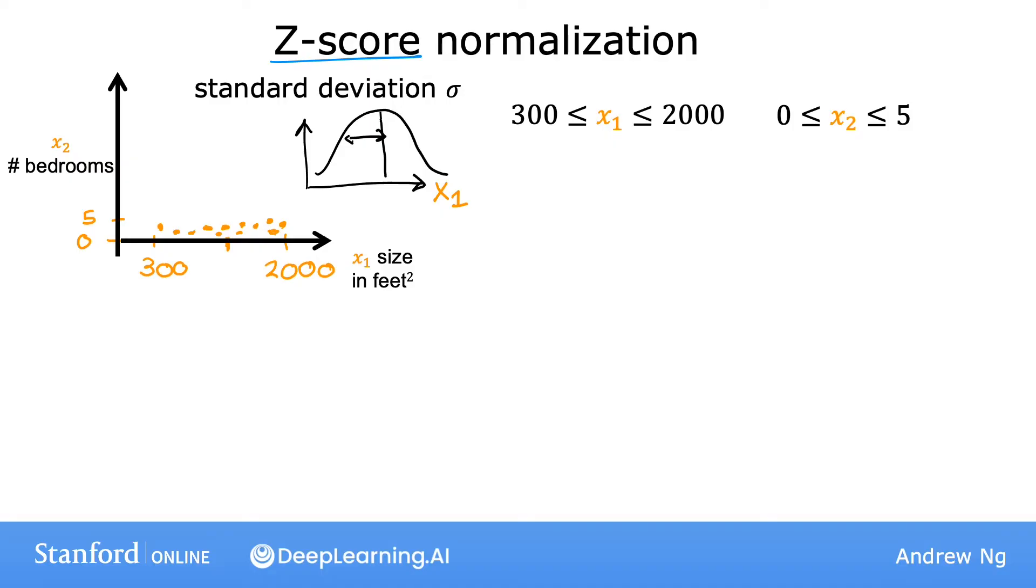But if you do know what the standard deviation is, then to implement a z-score normalization, you first calculate the mean mu as well as the standard deviation, which is often denoted by the lowercase Greek alphabet sigma of each feature. So for instance, maybe feature 1 has a standard deviation of 450 and mean 600. Then to z-score normalize x1, take each x1, subtract mu1, and then divide by the standard deviation, which I'm going to denote as sigma1. And what you might find is that the z-score normalized x1 now ranges from negative 0.67 to 3.1.